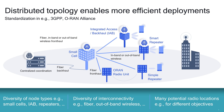Here is a simple graphical representation of the different millimeter wave topology options. We have diverse connectivity options and node types such as small cells, integrated access and backhaul, simple and smart repeaters, and more. Each of these options has pros and cons, and they can be deployed to meet different network design objectives.